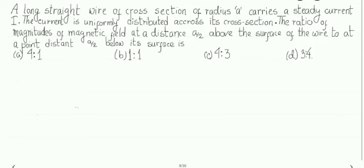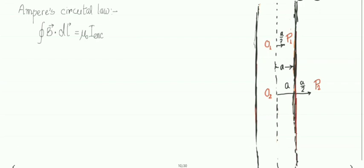Welcome everyone. The question involves a long straight wire of cross-section radius a, so the cross-section area is πa². It carries a steady current, meaning the current is not changing with time — this is a problem of magnetostatics. The current is uniformly distributed across its cross-section. Electrons are flowing through this uniform cross-section and I am showing the drift of electrons.